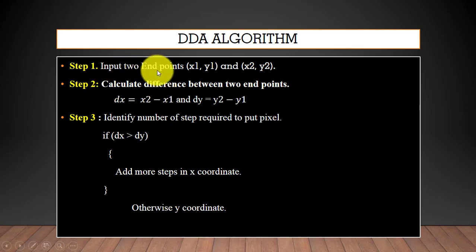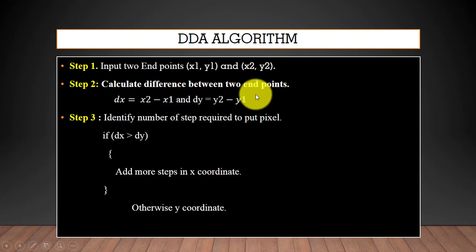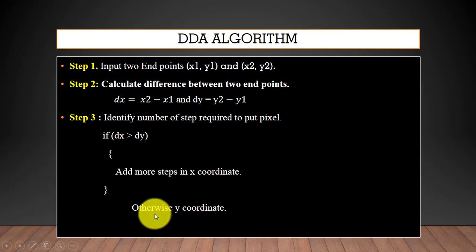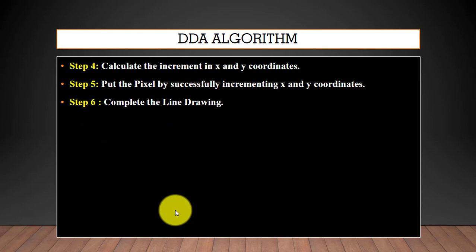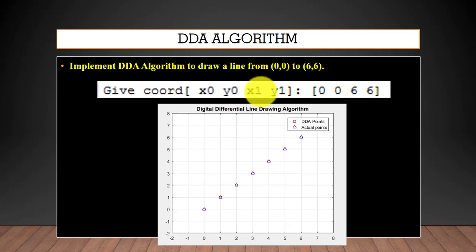In the DDA algorithm, the first step is to input the two endpoints. In the second step, we calculate the difference between the two endpoints — I'm denoting delta-x as dx and delta-y as dy. Then we identify the number of steps required to place the pixels: if dx is greater than dy, we add more steps in the x coordinate; otherwise we add more steps in the y coordinate. In the fourth step, we increment the x and y coordinates and put the pixel, continuing until the complete line is drawn.